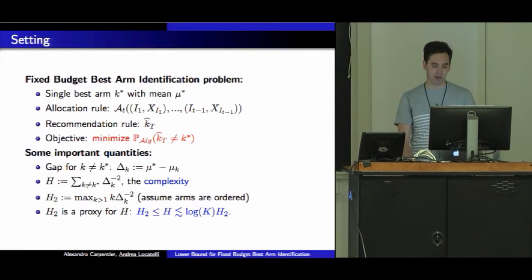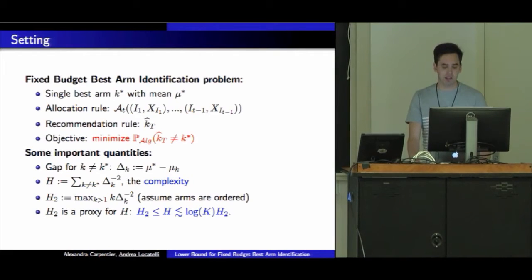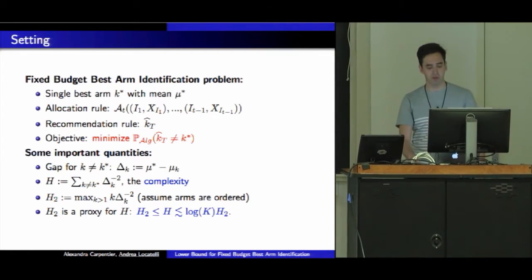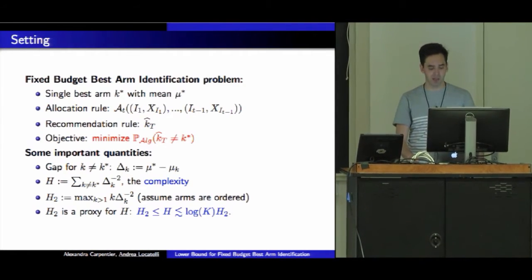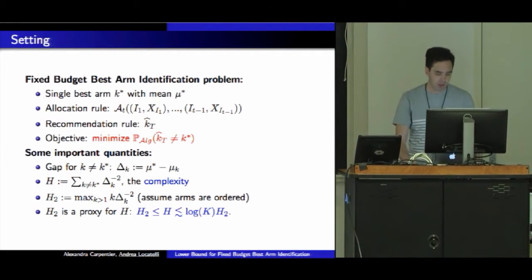Some important quantities in this problem: I call the gap Δ_k simply the difference between the mean of the best arm and the mean of arm k. I call H the complexity of the problem, the sum of the gaps to the power minus 2 for all suboptimal arms.